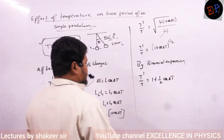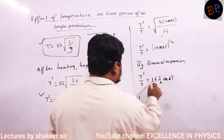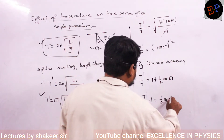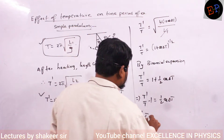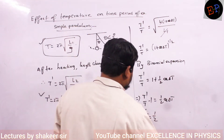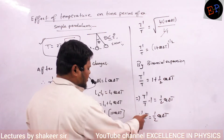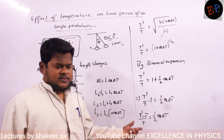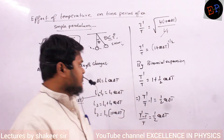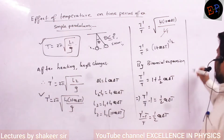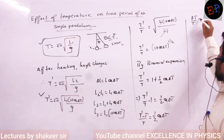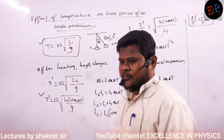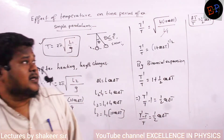So I will take 1 to the other side: T dash by T minus 1 equals half α·∆T. Then I can write T dash minus T divided by T equals half α·∆T. T dash is the final time period and T is the initial time period, so T dash minus T is the change in time period. Therefore, change in time period divided by original time period equals half α·∆T.